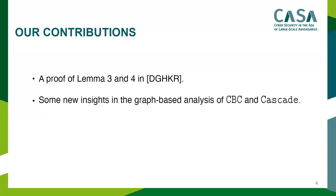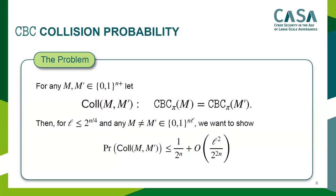Our contribution is a proof of Lemmas 3 and 4 from the Crypto 2004 paper, and in the course of developing this proof we found new insights in the graph-based analysis of CBC and Cascade.